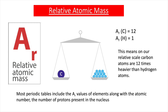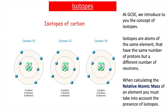At GCSE, you might also have come across the term mass number. The mass number is the number of protons and neutrons, but it's not quite the same as the relative atomic mass, because the relative atomic mass also takes into account the presence of isotopes. At GCSE, you were introduced to the concept of isotopes as being atoms of the same element that have the same number of protons but a different number of neutrons.